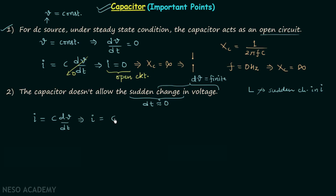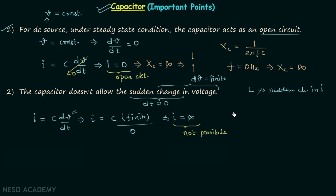Since the current through the capacitor is equal to C·dV/dt, we get current I equal to C multiplied by a finite dV divided by dt which is zero, giving I equal to infinity. It is not possible to provide a current of infinite value, so this is not physically realizable. Therefore our assumption of a sudden change in voltage is not true, and we have proved that a capacitor will not allow a sudden change in voltage.